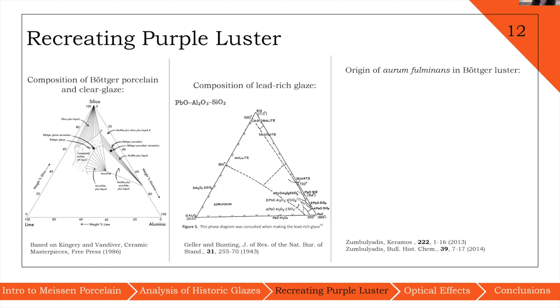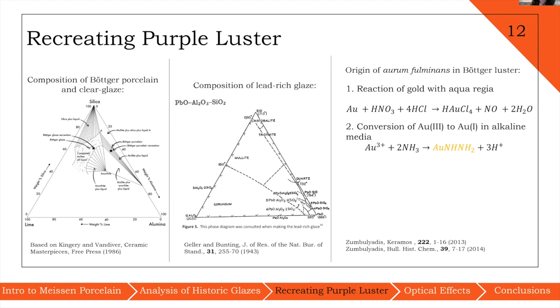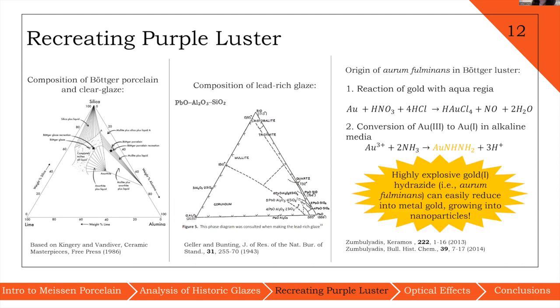When it came to actually forming the nanoparticles, we looked at recently translated recipes from Meissen to learn that in the original factory, they reacted gold with aqua regia. Then they could convert this within an alkaline media into the highly explosive gold hydrazide that easily reduces into metal gold. So gold hydrazide was the metal salt that was fused with a flux and then applied onto the glaze. During the firing step, the salt reduced into gold nanoparticles at different rates leading to that variation in particle size. In our lab, we didn't want to work with gold hydrazide. So instead we used gold chloride on our samples with a similar concept that these gold salts are then going to reduce into gold nanoparticles.